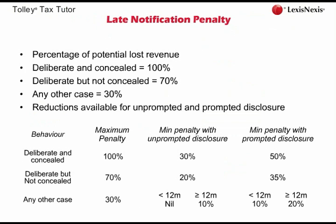The table now appearing on screen details the maximum and minimum penalties that could apply. For example, if a taxpayer has failed to notify and his behaviour is deliberate and concealed, he will be charged a penalty of between 30% and 100% of the potential lost revenue if he makes an unprompted disclosure to HMRC. Note that where the taxpayer is simply careless in not making the necessary notification, the reduction in penalty also depends on how long has elapsed since any tax or NIC first became unpaid as a result of the failure. Disclosure is unprompted if the taxpayer has no reason to believe HMRC have discovered or are about to discover the failure.